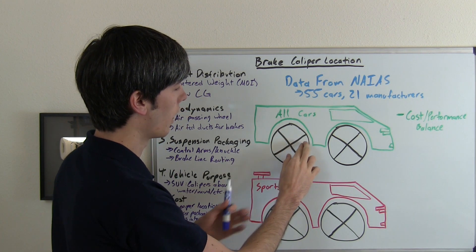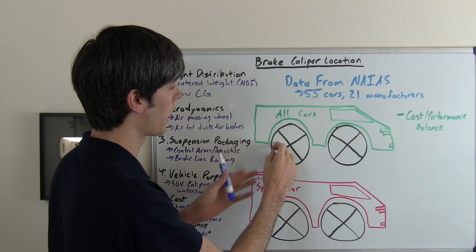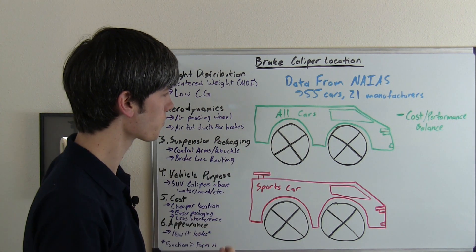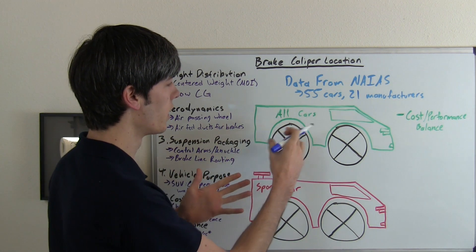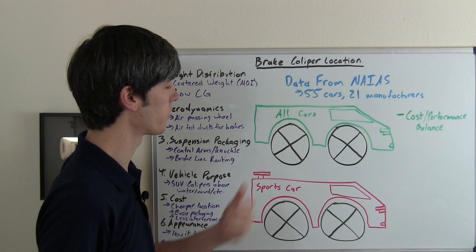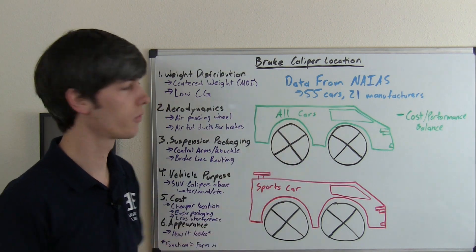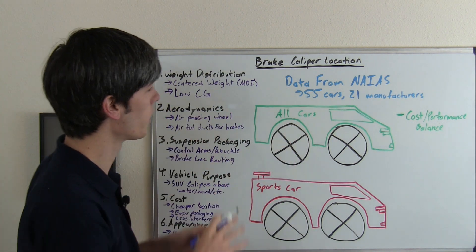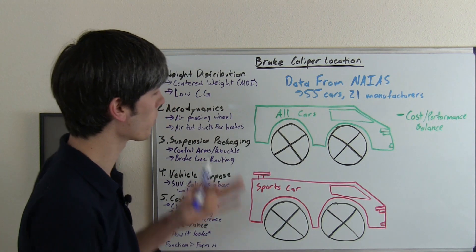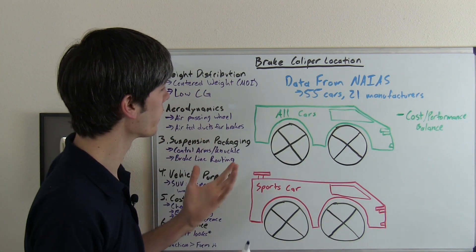And then you've got this upper quadrant, inner quadrant, lower quadrant and towards the rear of the vehicle. So on a percentage basis is what I'm looking at where they placed the brake calipers. So of these 55 cars and if it wasn't apparent this green car here represents all cars. It's a van and it's green.